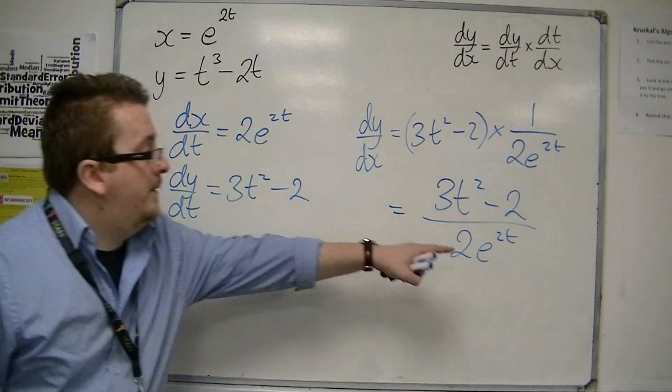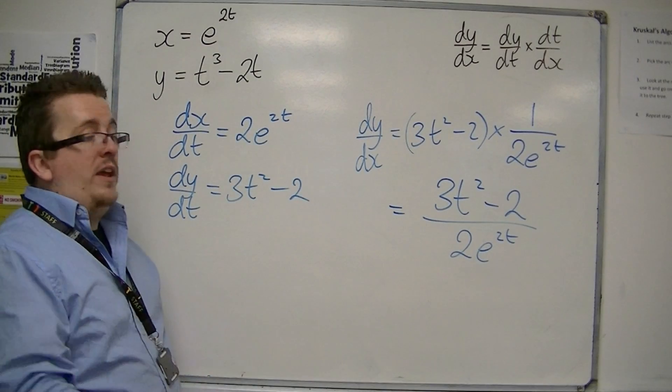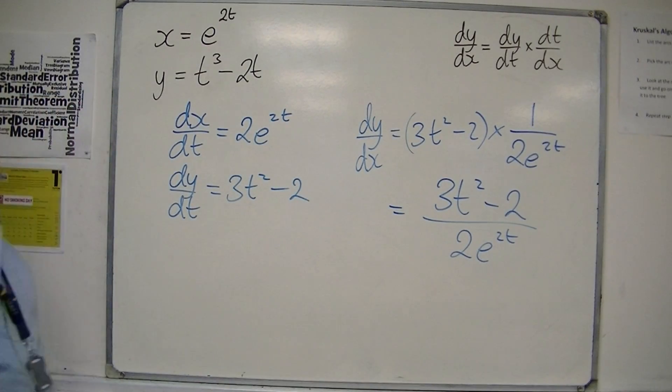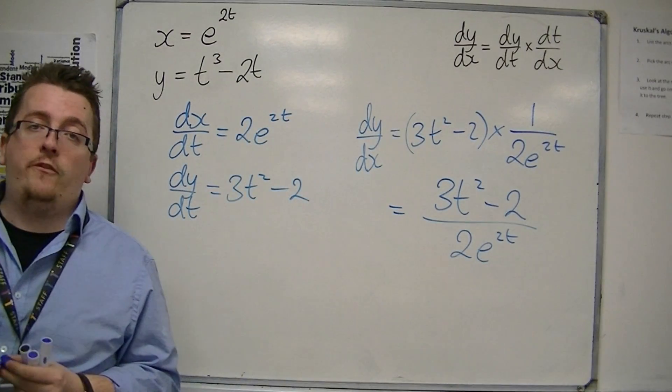So I can simplify that by writing 3t squared minus 2 over 2e to the 2t. And that is the derivative. And as you can see, it is in terms of t in this case. So that is how we can work with it, and that's how we can do parametric differentiation.